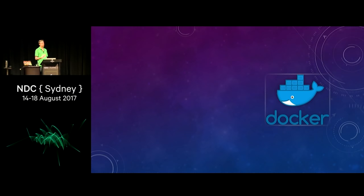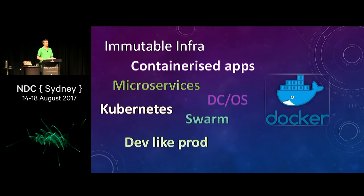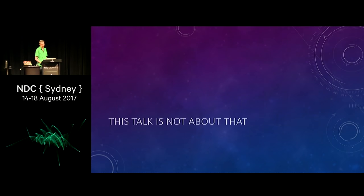So obviously this is a talk about Docker. When we talk about Docker, we talk about a whole bunch of different things — immutable infrastructure, containerized architectures using microservices, deploying into the cloud using Kubernetes or DCOS or Swarm. We talk about how we can use Docker to make our development environment almost identical to production, how we build and ship it so nothing changes as we roll across all environments. This is not a talk about that part of Docker.